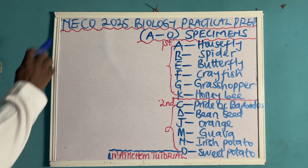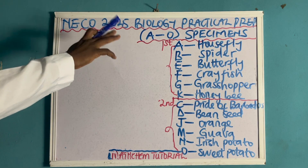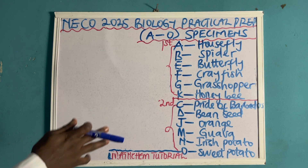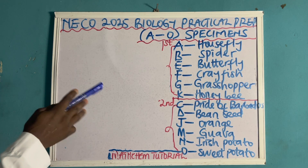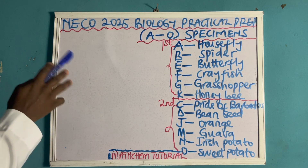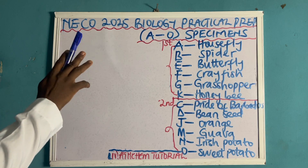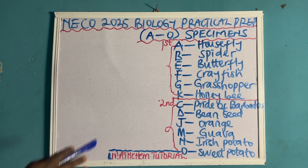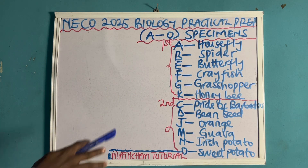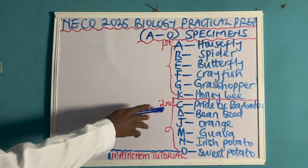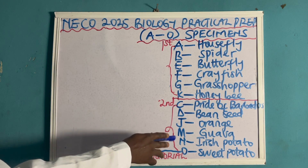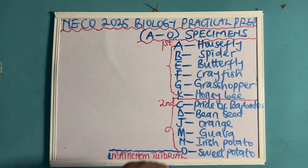In this video, we'll be looking into NECO 2025 Biological Practical Prep. The specimens we have for this Biological Practical NECO range from specimen A to O. This video covers the second category, which includes specimens C, D, J, M, N, and O.